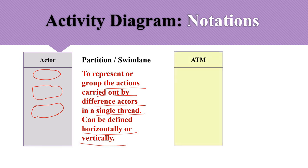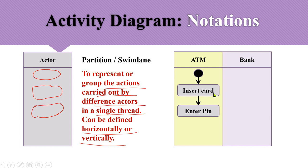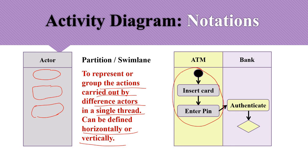For example, with two actors — ATM and Bank — the ATM is responsible for inserting the card and prompting the user to enter the PIN. But it is the bank authority that authenticates the card and validates the PIN. So the insert card and prompt PIN activities belong to the ATM swim lane, while the authenticate activity belongs to the Bank swim lane, each representing the boundary of each actor's responsibilities.